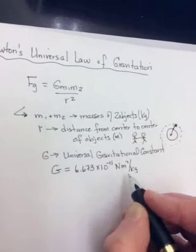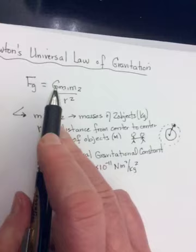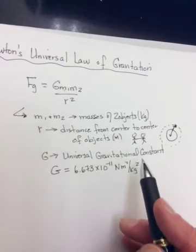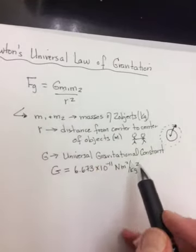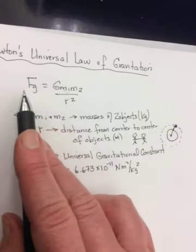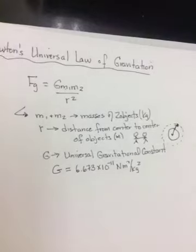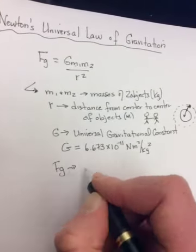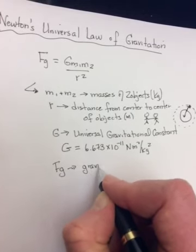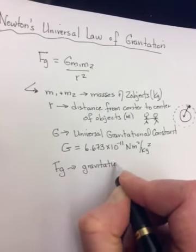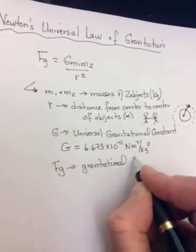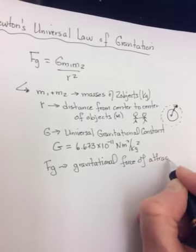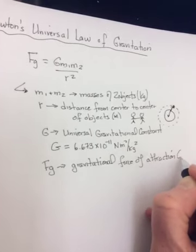This radius is measured in meters. If you look at the units, newton meters squared per kilogram squared times a kilogram times a kilogram, so the kilograms will cancel. Divided by a meter squared, the meters will cancel. You'll be left with newtons, which is what Fg is measured in. So Fg is the gravitational force of attraction.